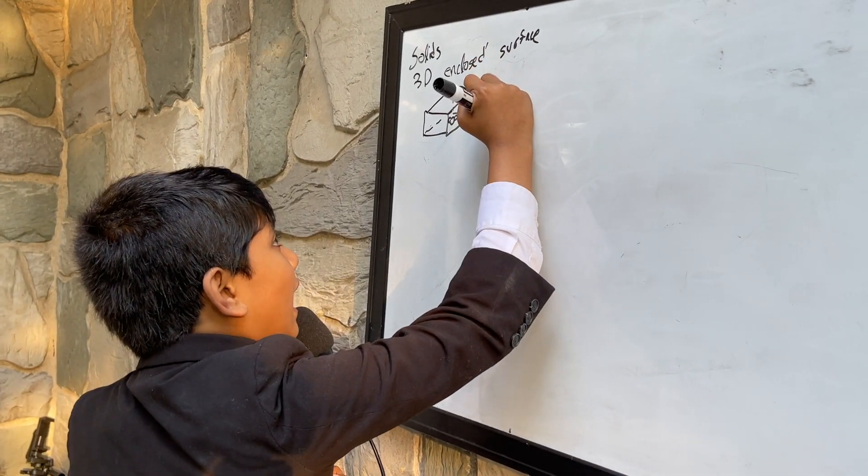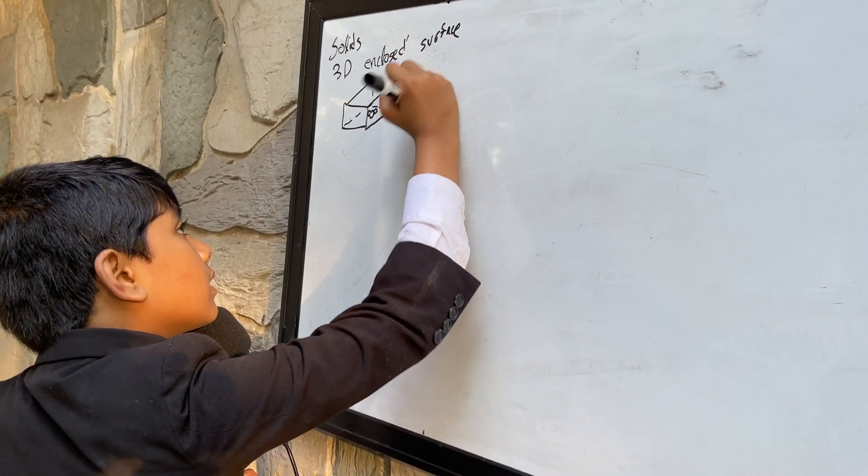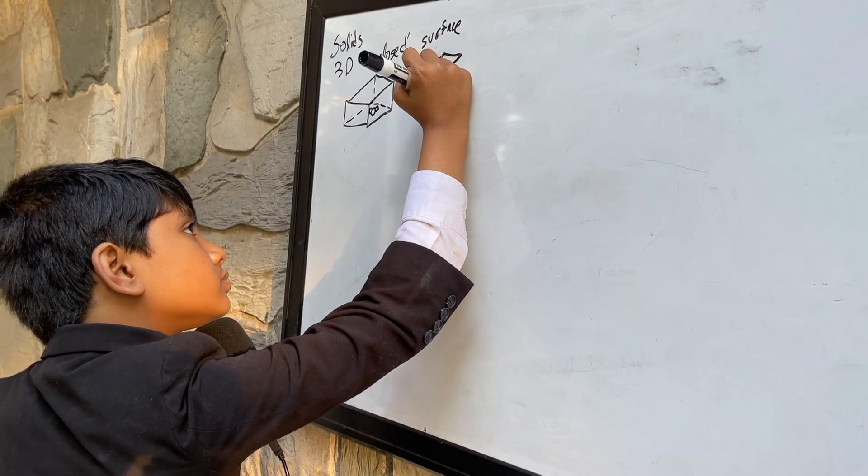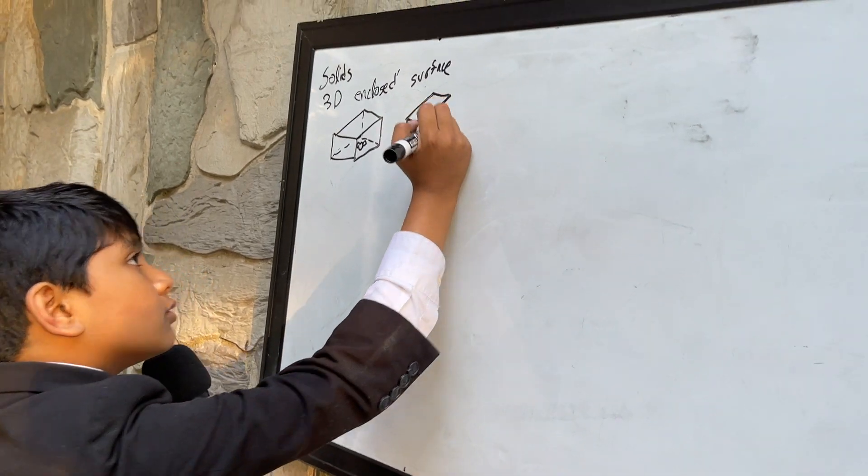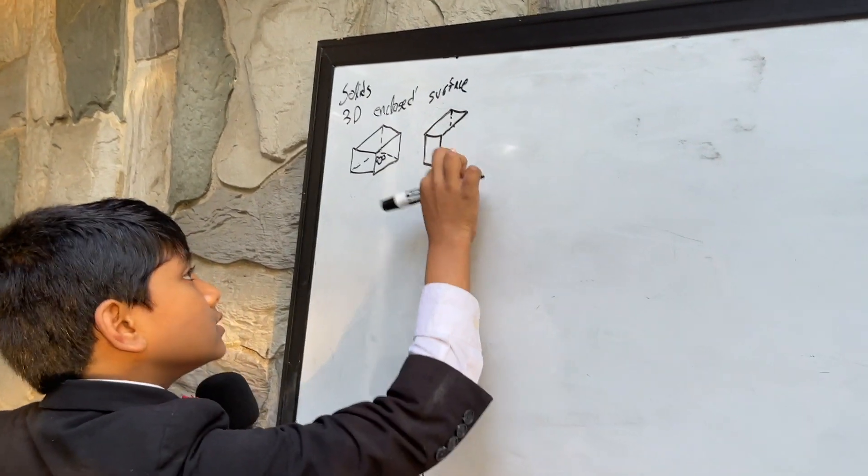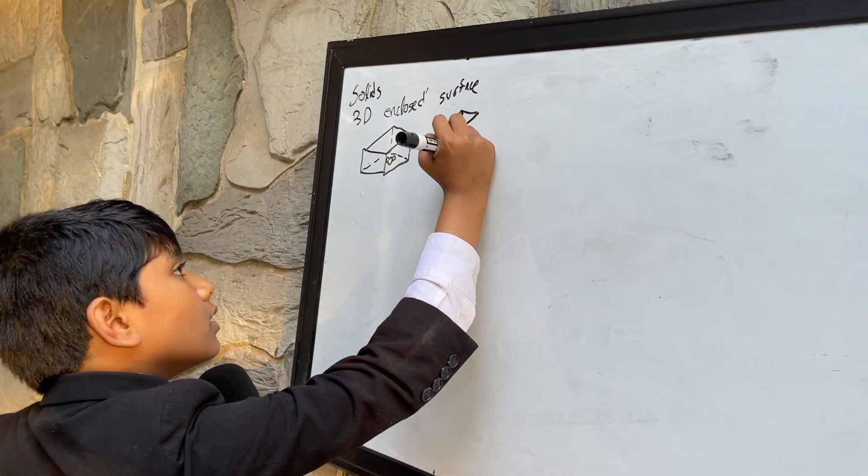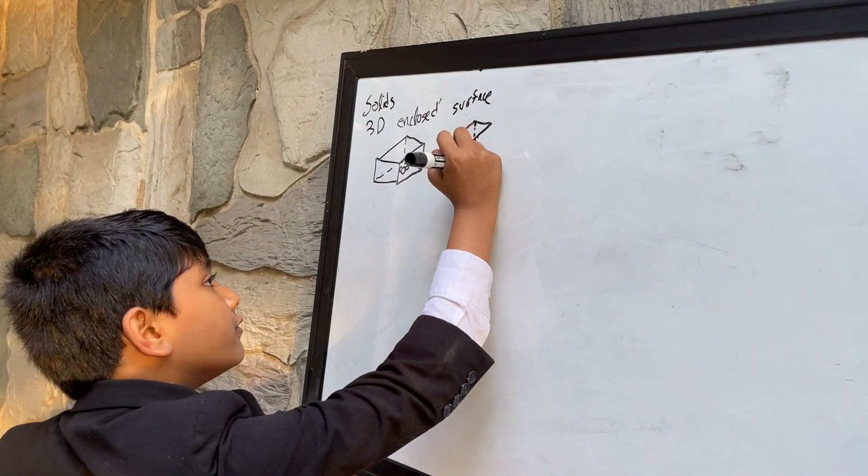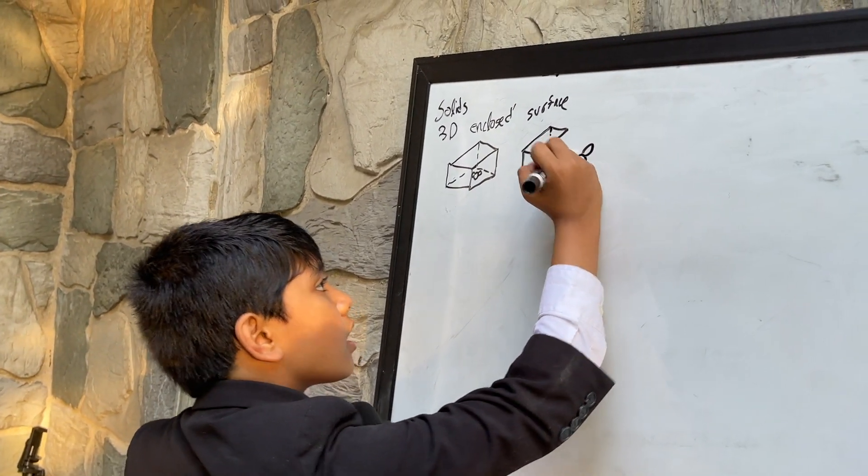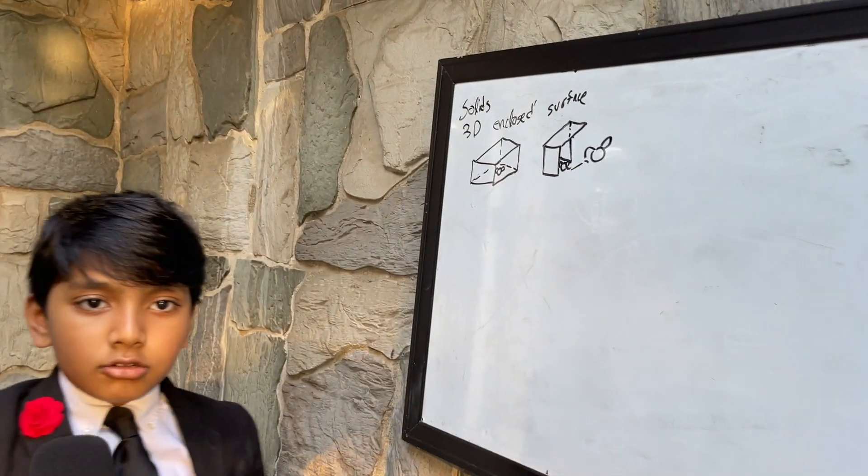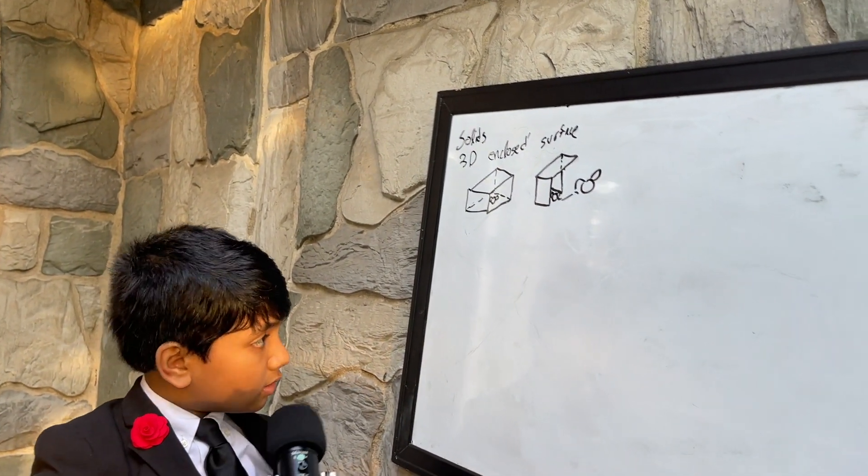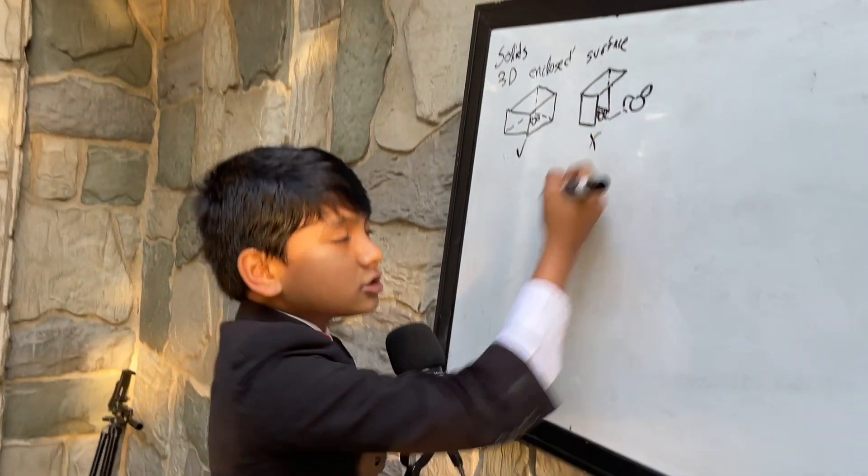However, what if we had an unfully enclosed surface? So, like, for example, a surface like this one. Well, let me just redraw that. Well, now, the fly, if we put it here, it can just fly away. So, we don't want the fly to fly away. Otherwise, it's not a solid.